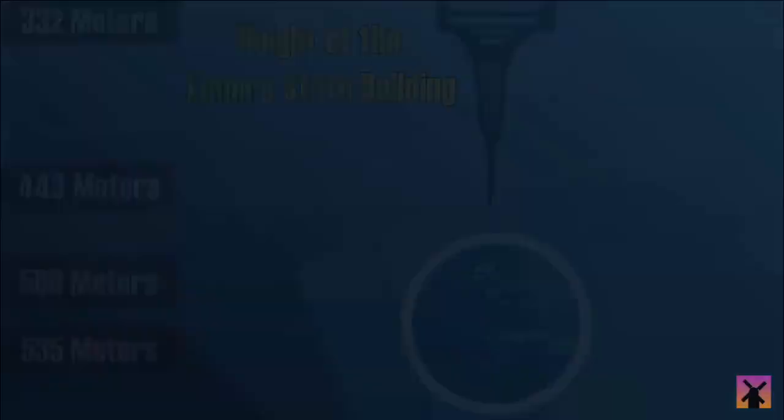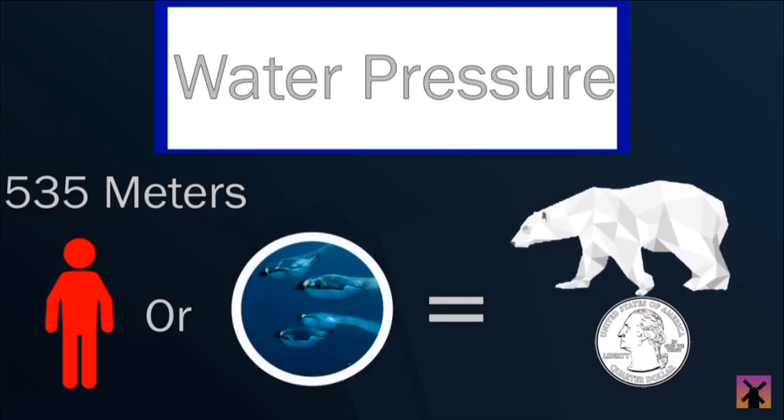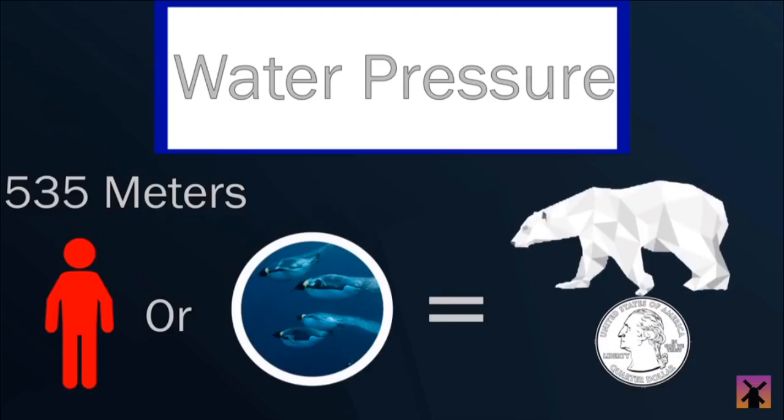This is when we must bring up the intensity of water pressure. At this level below the surface, the water pressure exerted on a person or the penguins would be roughly equivalent to a polar bear standing on a quarter. So further down the depths, at 830 meters, would be the height of the Burj Khalifa in Dubai, the tallest building in the world.